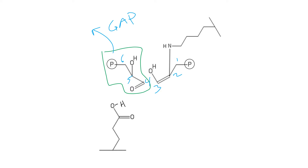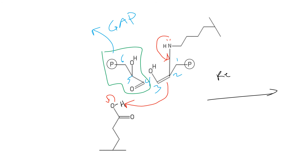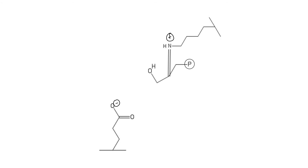In the next step of this mechanism, I get a lone pair that's on my nitrogen pushing down to make a double bond here, and these double-bond electrons are going to grab a proton from my glutamate. So in this step, I am regenerating my Schiff base. Now G3P has left and I've regenerated my Schiff base with carbons 1, 2, and 3.